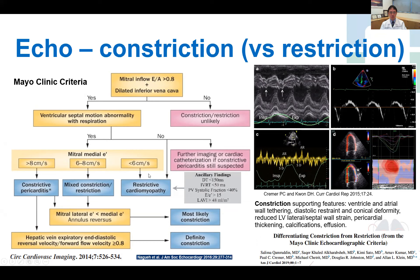As opposed to restrictive heart disease where there's a low medial E'. Often in constrictive pericarditis, the medial E' is higher than the lateral E', termed annulus reversal. We also interrogate the hepatic veins for expiratory end-diastolic reversal to forward flow velocity of more than 0.8. For restrictive heart disease, we expect signs of severe diastolic dysfunction. Echo examples on the top right include M-mode showing respirophasic septal shift.